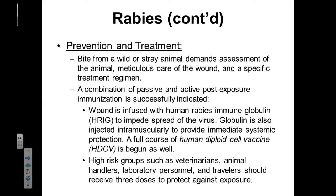If you were bitten by a wild or stray animal, that typically demands an assessment of the animal, meticulous care of the wound, and treatment with the vaccine. Many times, these animals are going to be put into observation to make sure the animal does not have rabies. After that period of observation, if the animal exhibits no signs of rabies, the animal may be allowed to live. Oftentimes though, animals are going to be put down if they show a predisposition towards biting human beings.